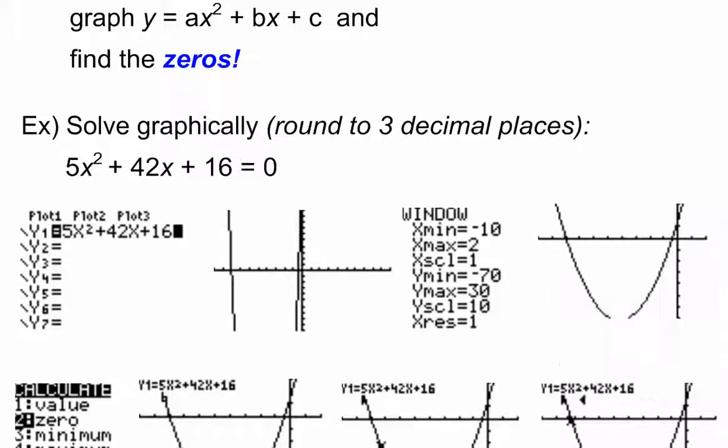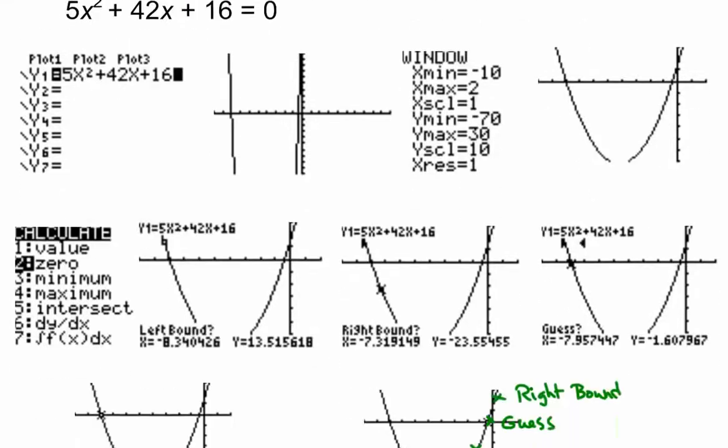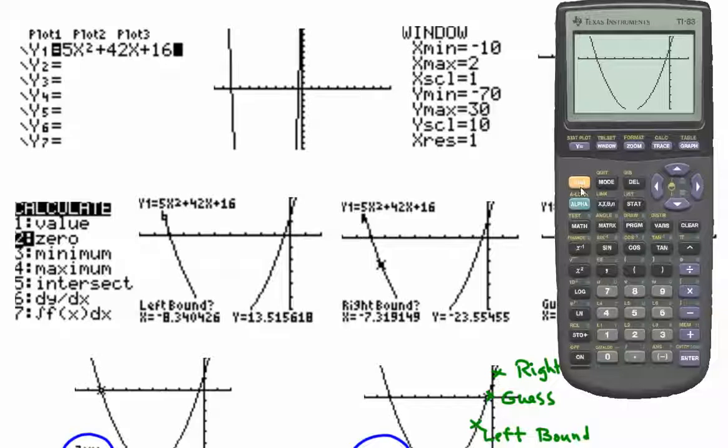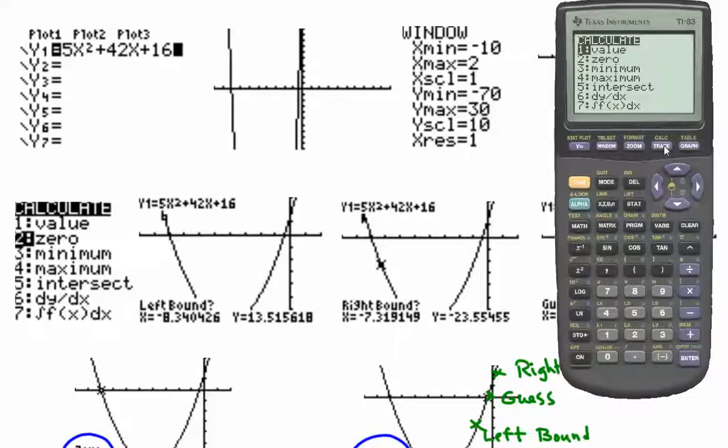So again, I've got the screenshots here. If you print this out and look at the notes. How do I go through this? I'm going to go to 2nd, and then that Calculate menu, and we want number 2 here, the zeros.